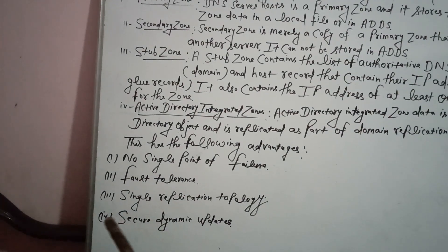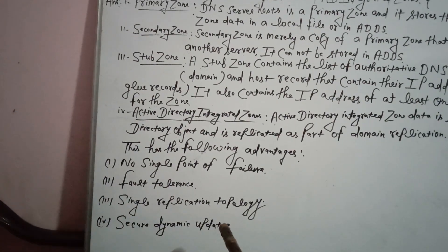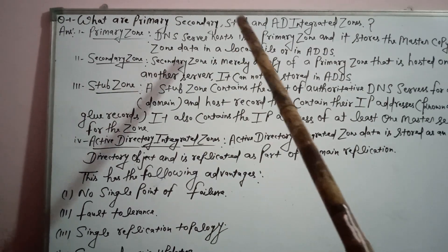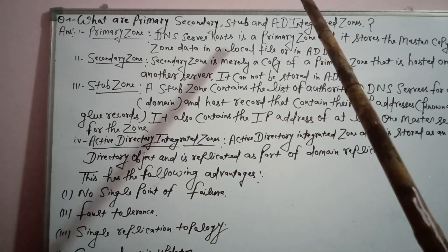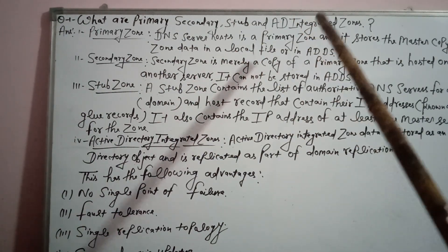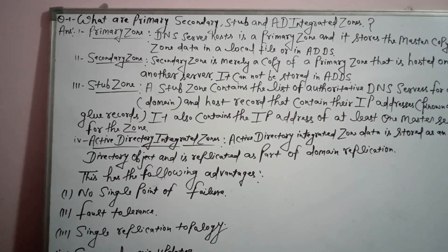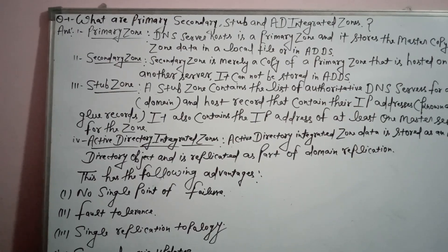That's all about my topic — what are primary, secondary, stub, and AD integrated zones. Guys, how did you like my topic? Like, share, and thanks for watching.